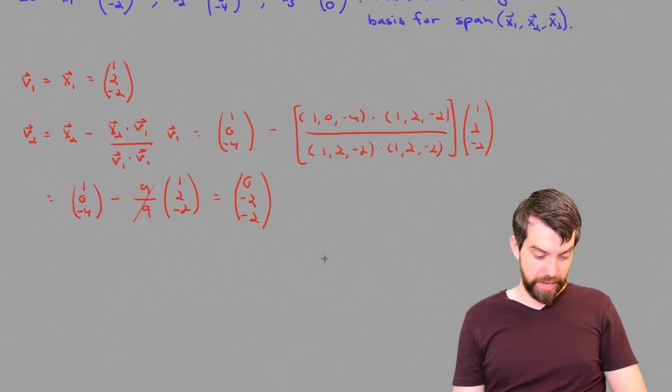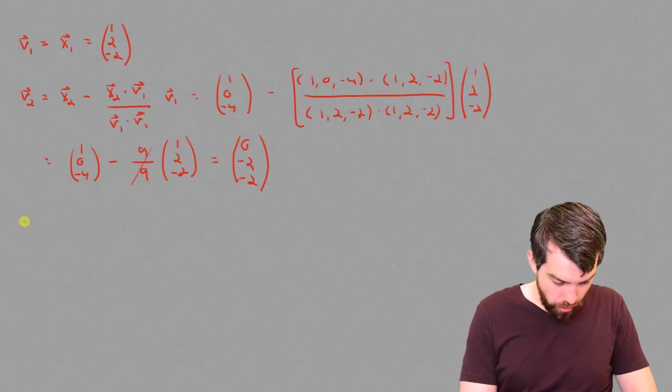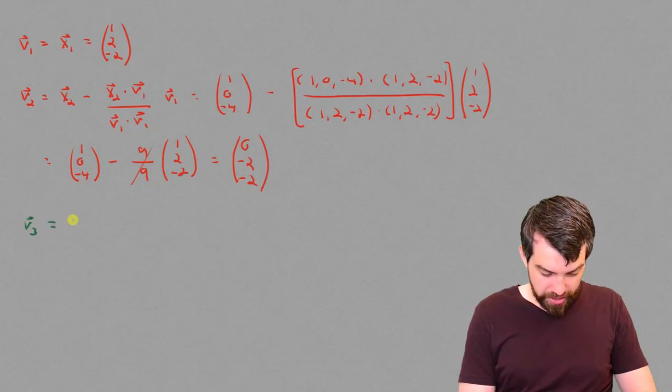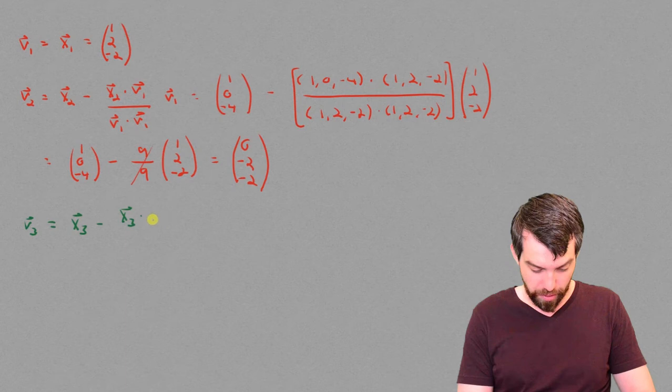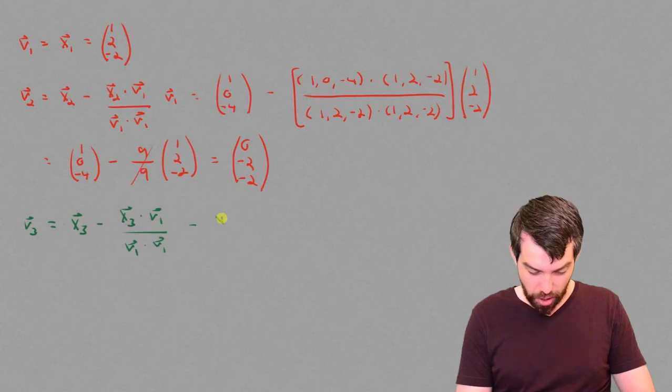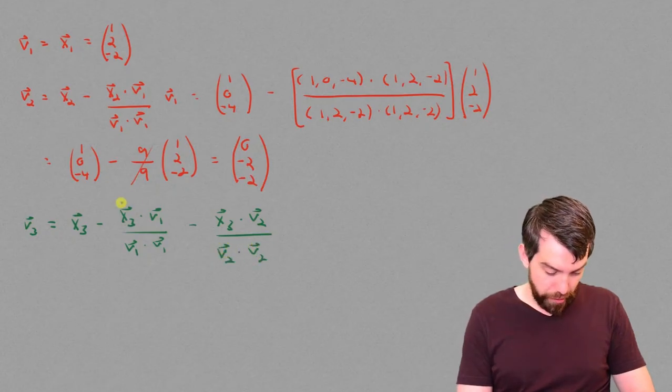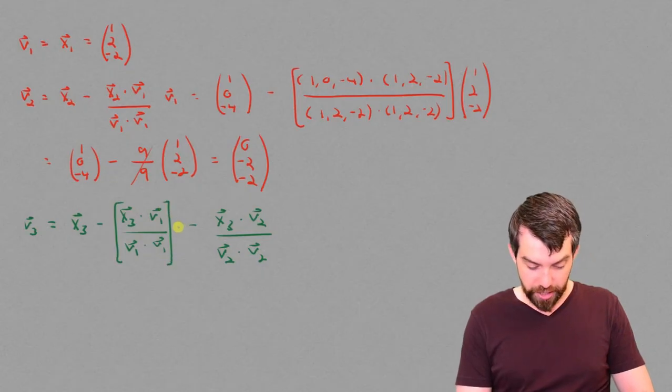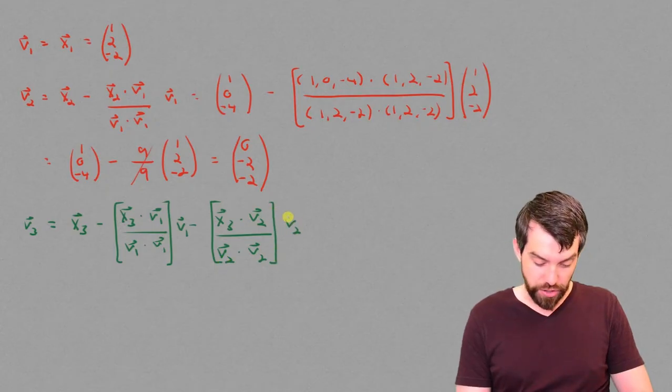Next up, let's just change colors for some variety. Let's go to the v3 now. This is going to be the same thing as x3 minus, and then I do the projections onto both the v1 and the v2. So I have to take x3 dot v1 over v1 dotted with v1, and then subtract off the x3 dotted with the second one, the v2, and so I divide out by v2 dotted with v2. And the first of these is a coefficient in the v1 direction, and the second of these is a coefficient in the v2 direction.